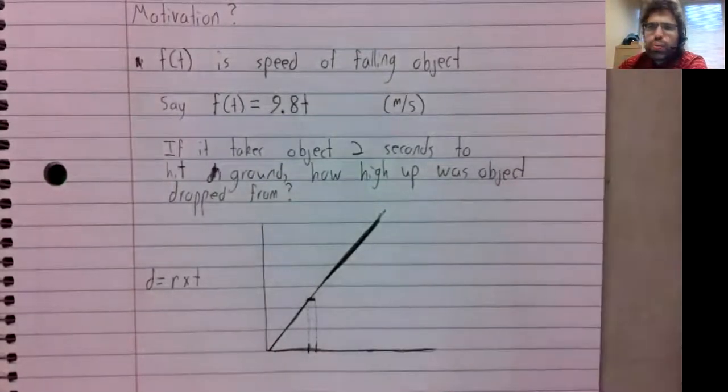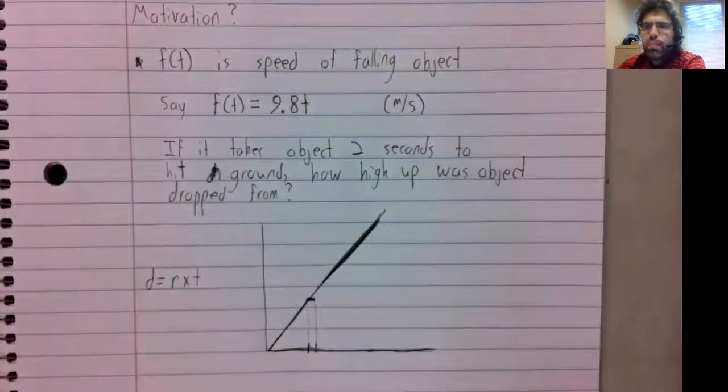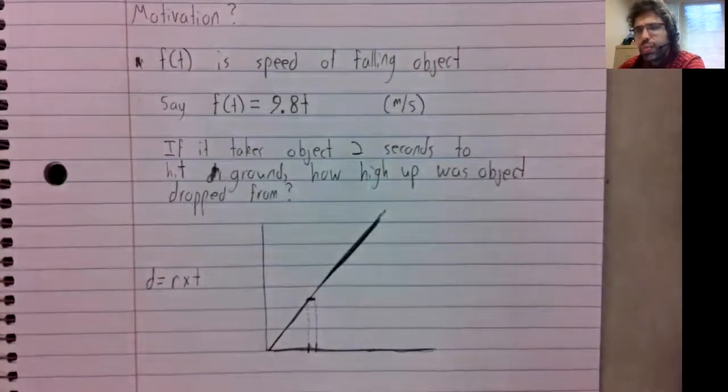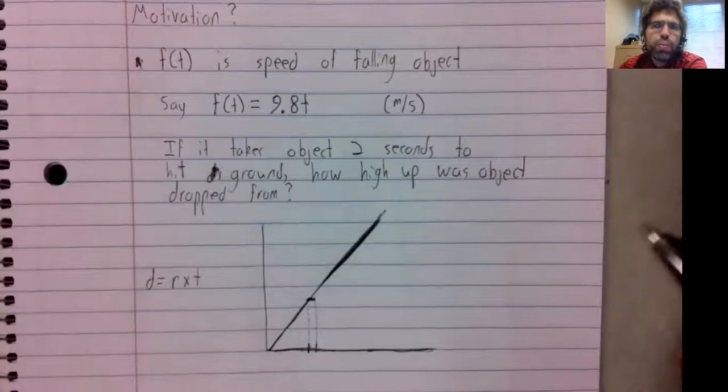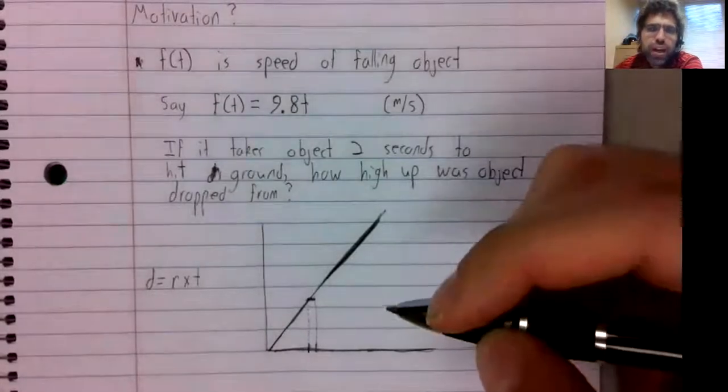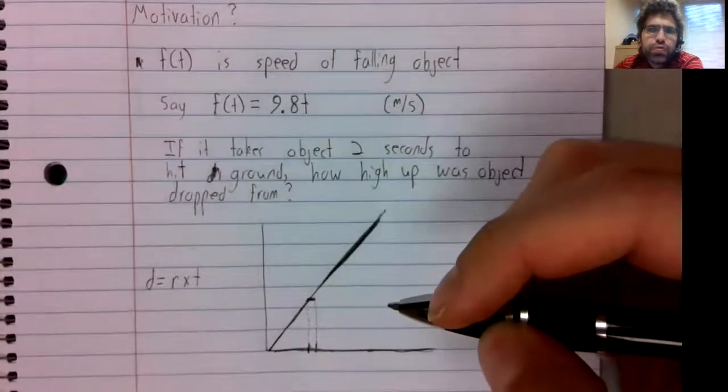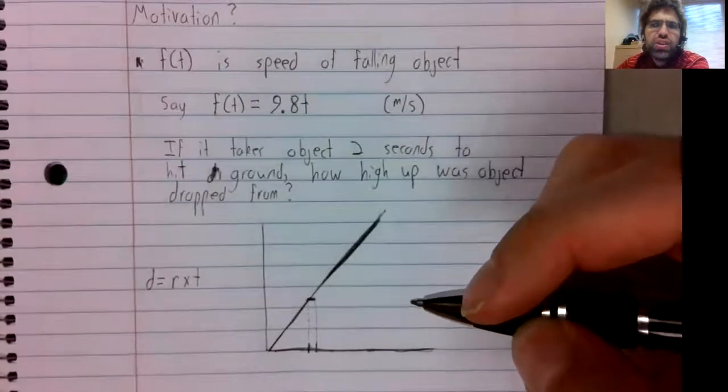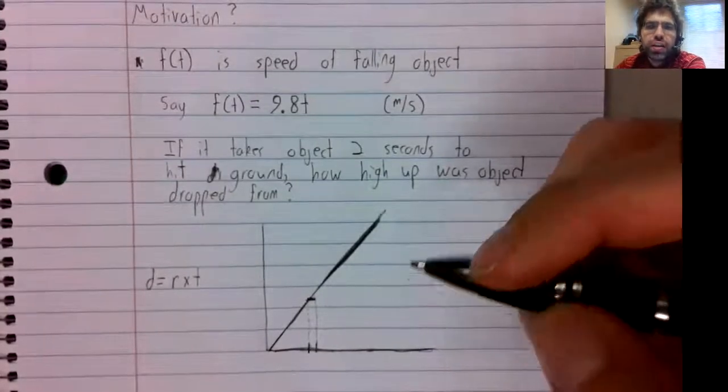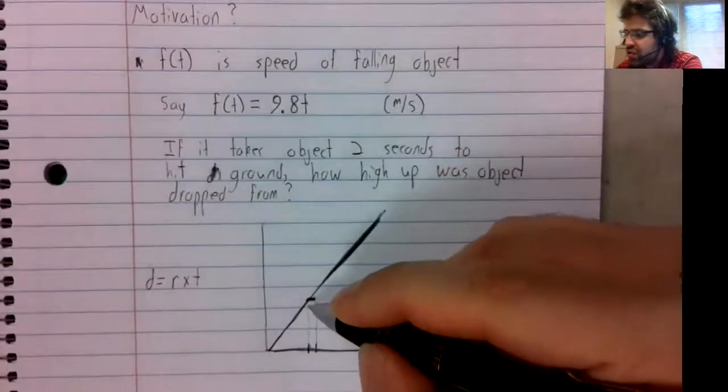If the interval we select is small enough, we should be able to get away with this and still get a pretty good approximation of the actual answer.